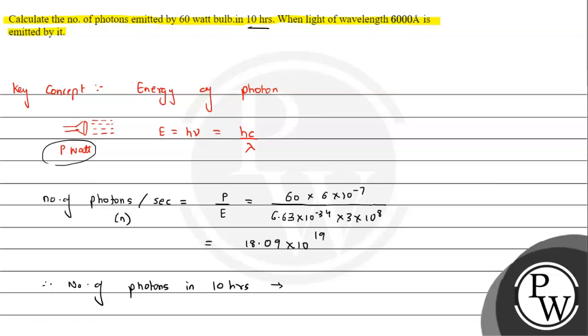18.09 × 10^19 times 10 hours. In 1 hour there are 3600 seconds, so it will be 10 × 3600. Finally, the result comes out to be 651.24 × 10^22. So this many photons will be emitted in 10 hours.